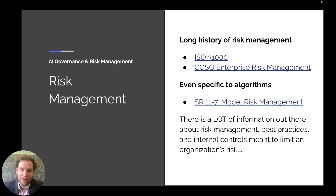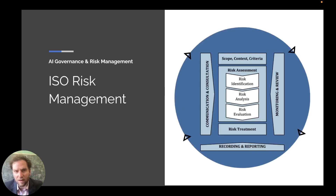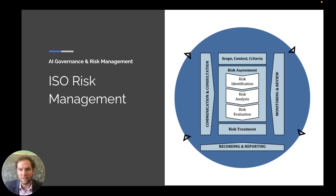There's a lot of information out there about risk management in general — best practices and internal controls meant to limit an organization's risk — so we're not going to try to cover these things in detail. What's important here is the focus on AI risks and AI governance. Here's an example from ISO 31000 and how they conceptualize risk management. Central to this process is risk assessment, which is a primary and most important objective. You identify risk, analyze risk, evaluate risk, and then you need risk mitigation or risk treatment at the end.